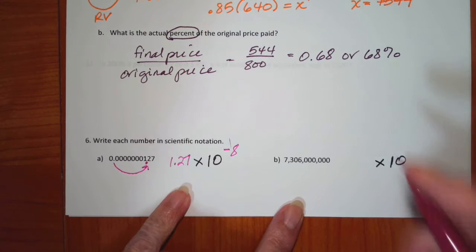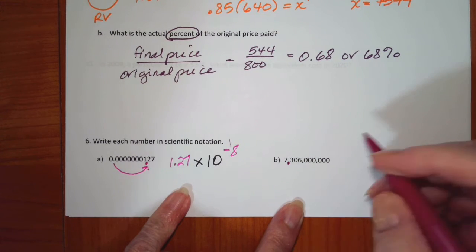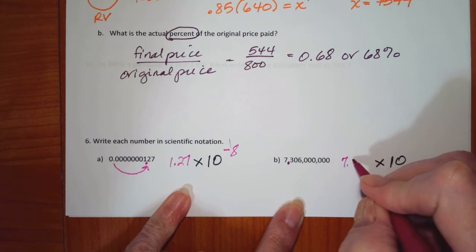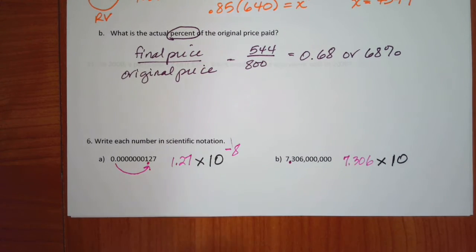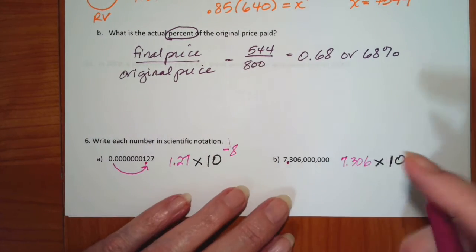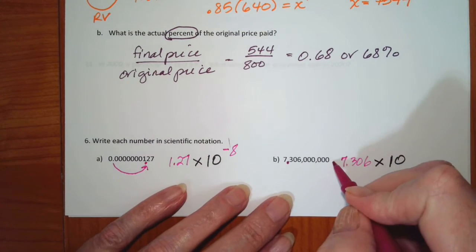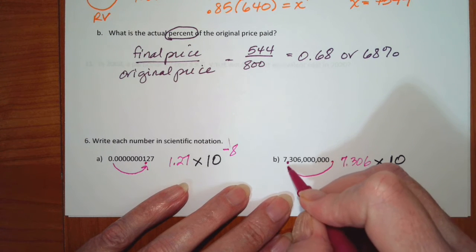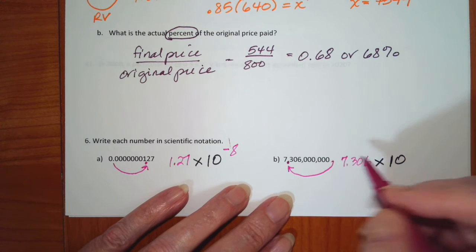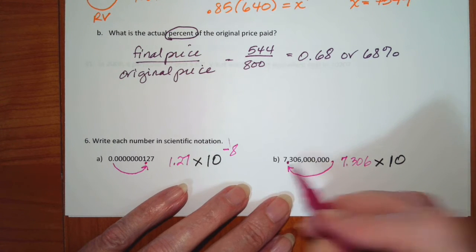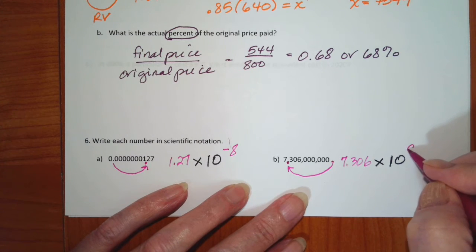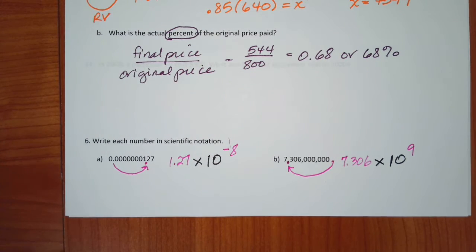In the next one, I know that my decimal has to be right here, so I'm going to have 7.306 times 10 to some number. This is a great big number. My decimal is originally here and I need to move it to here. I just count the places: 3, 6, 9 — so this is a positive 9.